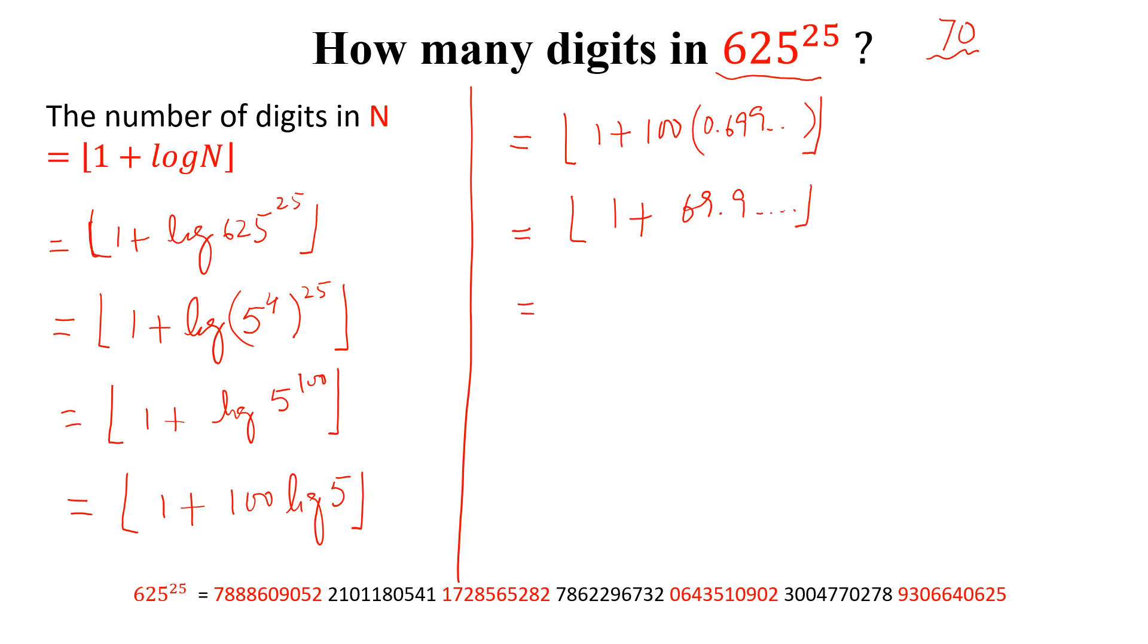Now, 1 with 69.9, we get floor function of 70.9 up to so on. Now, the floor function of this is 70.